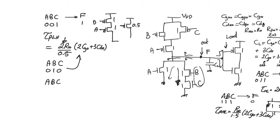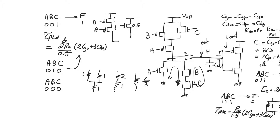The best case tp low-to-high always occurs with the all-zeros input, which maximizes branches available in the pull-up network. With B and C in parallel (each sized at 1, giving equivalent W/L of 2) in series with A (sized at 1), the overall equivalent aspect ratio is 2/3. Therefore, tau p low-to-high for the best case is (2R0 / (2/3)) × (2CG0 + 3CD0). This is the minimum possible low-to-high delay.